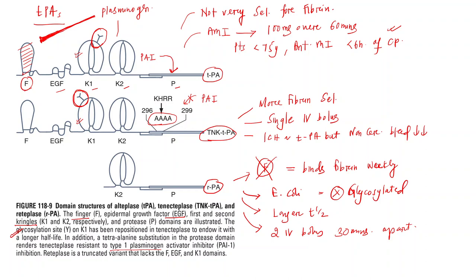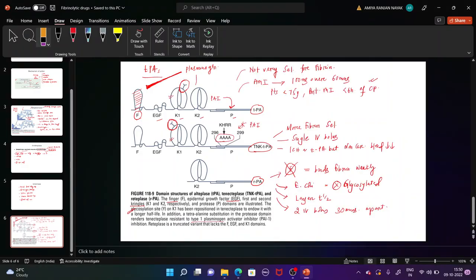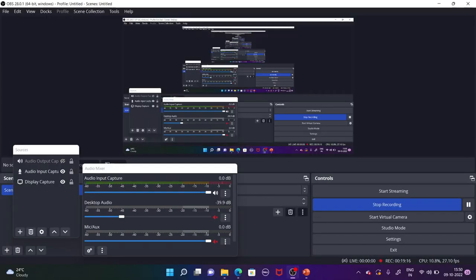From this discussion we understand that in cases of acute myocardial infarction, the best thrombolytic therapy is either tenecteplase or reteplase. Tenecteplase is given as a single IV bolus so it is more convenient — that is why tenecteplase is the preferred drug. That's all about the fibrinolytic drugs.